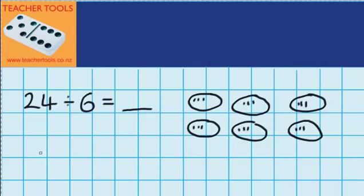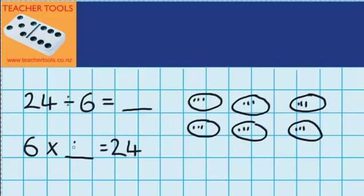So instead, I'm going to see if I can try and use my multiplication basic facts to help me answer this question. I can see that there's six groups, and I'm thinking six groups of some amount would equal the whole 24 counters that I've got to share out.